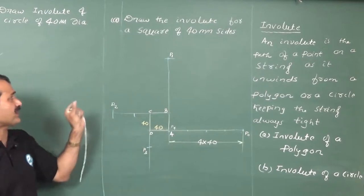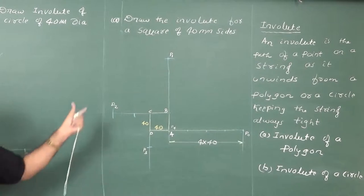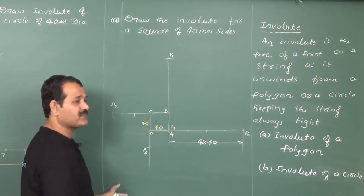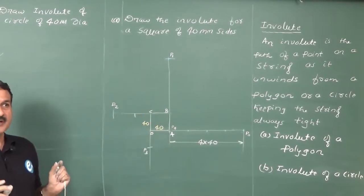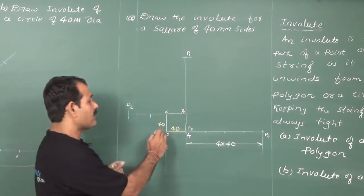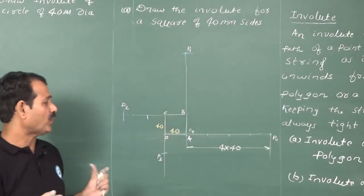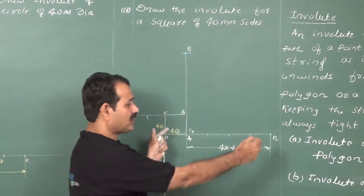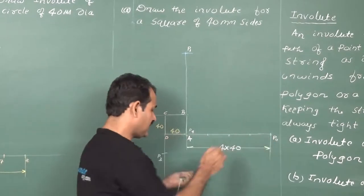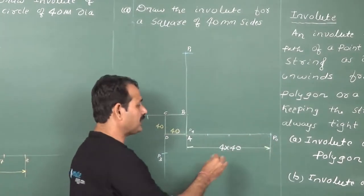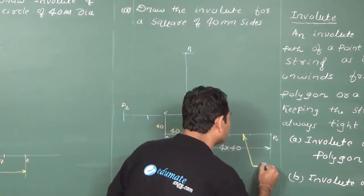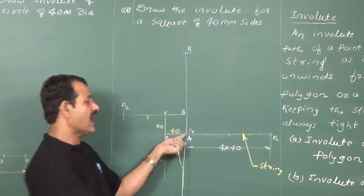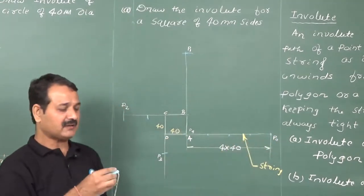Let us take the first example: drawing the involute of a polygon — specifically a square. I have drawn a square with a side of 40 mm. To draw the involute, the required length of string equals the perimeter of the square, which is four times the side, so 4 × 40 = 160 mm. One end of the string is held at the square, and the other end is free.